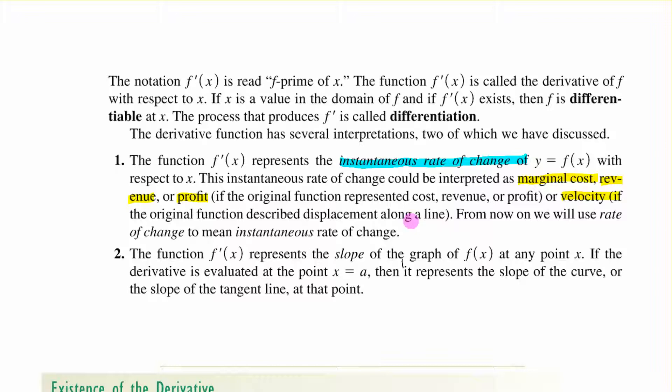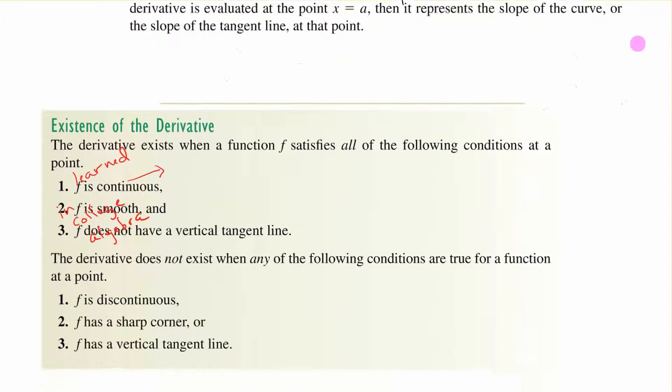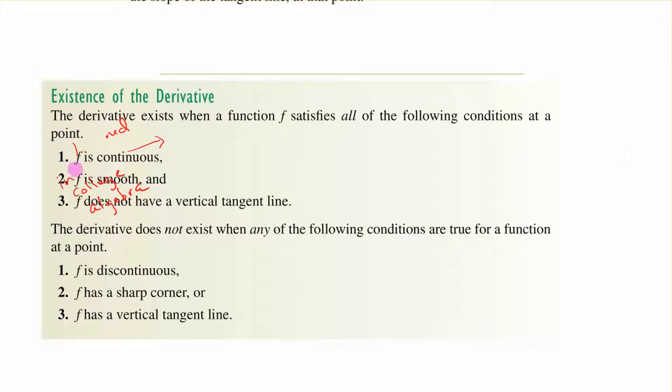The derivative exists when a function f satisfies all the following conditions at a point: f is continuous, it is smooth, it does not have a vertical tangent line. It does not exist when any of these are true: if it's discontinued, if it has a sharp corner—like if it went like this, it would not have a derivative there—or if it has a vertical tangent line. Remembering those, let's go look at our problems.